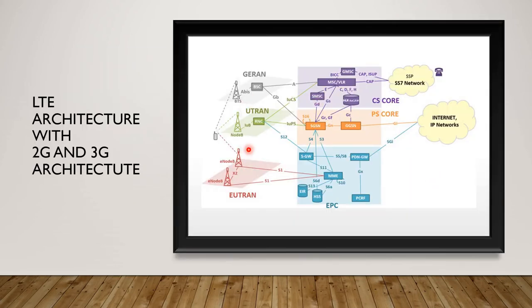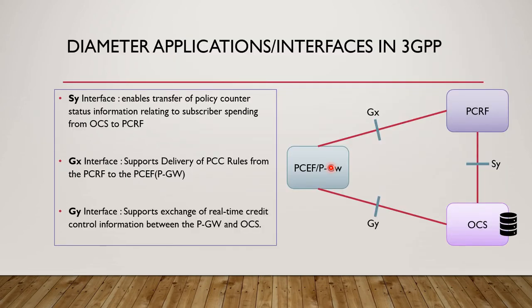The next slide shows how traditional networks work in conjunction with LTE networks. Since we've moved to 4G and are starting 5G, we still need to be compatible with older networks. That's why interfaces were created to work with networks like UTRAN (3G) and GRAN (2G). I'll skip this slide and move to the important one.